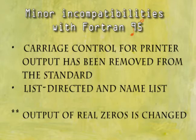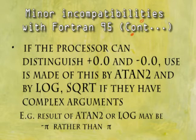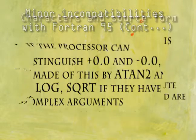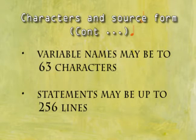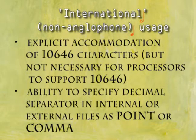Minor incompatibilities with Fortran 95: carriage control for printer output has been removed from the standard. List-directed and name-list output of real zeros is changed if the processor can distinguish +0.0 and -0.0. Use is made of this by ATN2 and by LOG and SQRT if they have complex arguments — for example, result of ATN2 or LOG may be minus pi rather than pi. The default character set is extended to include negation, division, square bracket, curly bracket, and hash. Variable names may be up to 63 characters, and statements may be up to 256 lines. International usage allows explicit accommodation of 10,646 characters.